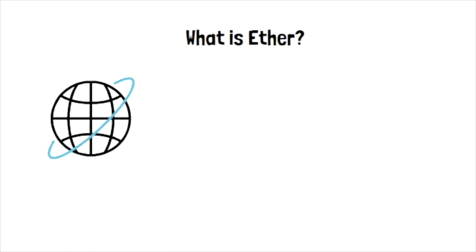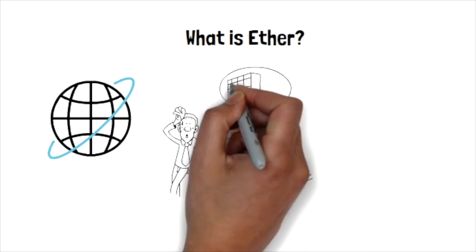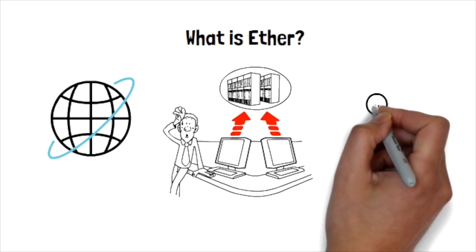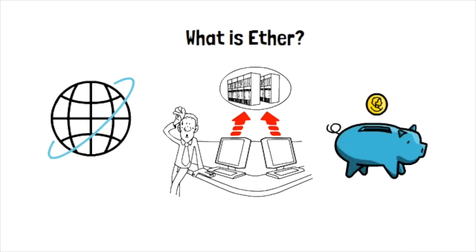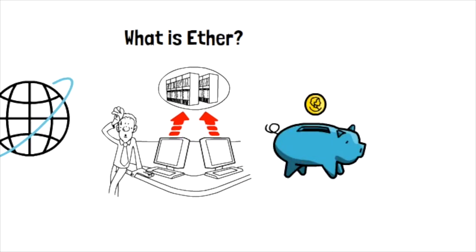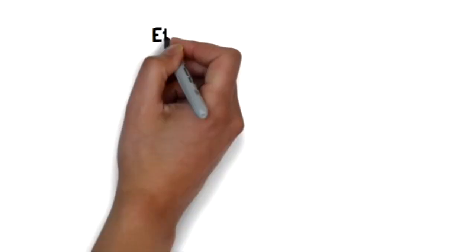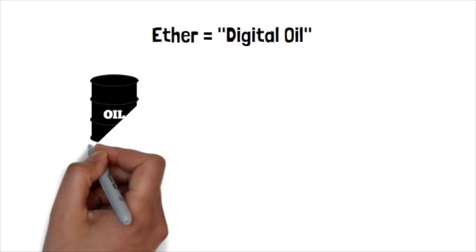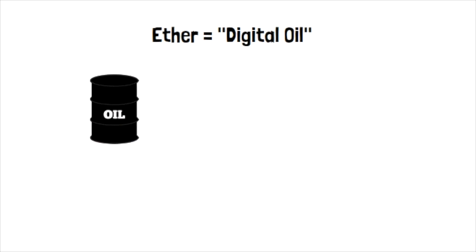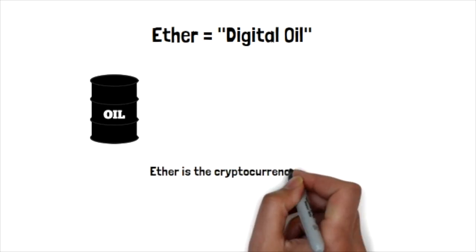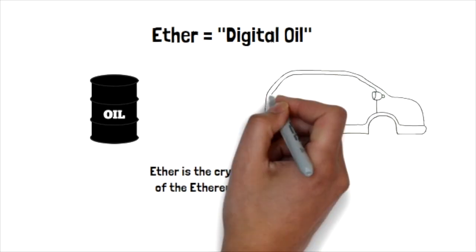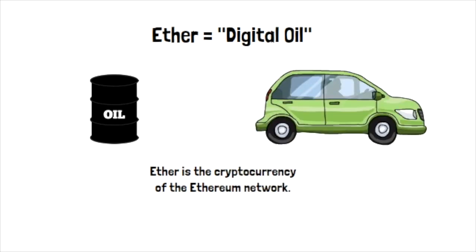All of these dApps on the Ethereum network require lots of computing power, and Ether is used to keep the network running. To create and deploy a dApp, the creator must pay Ether to the network. Just as a car needs gasoline, the network needs Ether to pay for all the computing power that is needed to keep a dApp operational. Simply put, Ether is the cryptocurrency of the Ethereum network, and it's like a digital oil used to keep the network running.